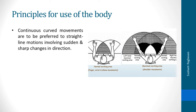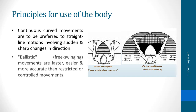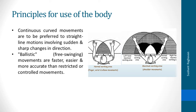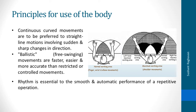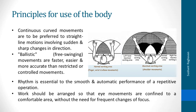Continuous curve movements are to be preferred to straight line motions involving sudden and sharp changes in direction. Ballistic free swinging movements are faster, easier and more accurate than restricted or controlled movements. Rhythm is essential to the smooth and automatic performance of a repetitive operation. Work should be arranged so that eye movements are confined to a comfortable area without the need for frequent changes of focus.